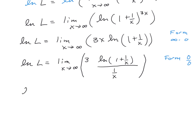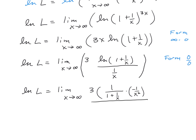Carrying down what we have so far — natural log of L equals the limit as x goes to infinity of 3 times — we take the derivative of the numerator. The derivative of natural log is 1 over whatever is inside, times the derivative of what is inside. The derivative of 1 is 0, and the derivative of 1 over x is negative 1 over x squared. Down below, the derivative of 1 over x is also negative 1 over x squared. We can algebraically cancel out the negative 1 over x squared since they are the same common factor.